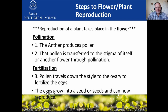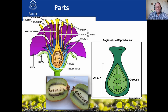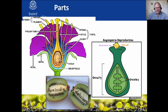Pollination is pollen moving from the anther to the sticky stigma. After that, the pollen tube grows down. Fertilization is when the egg and the sperm fuse to form a zygote - really, really important distinction.